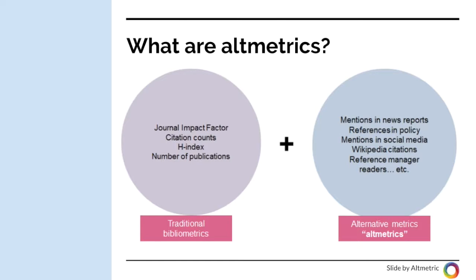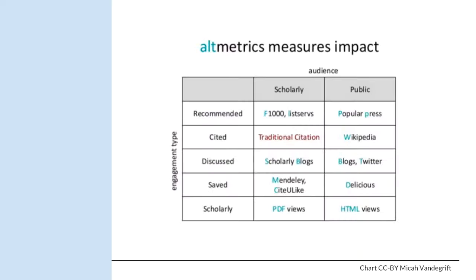Traditional bibliometrics include journal impact, citation counts, the H index, and the number of publications an author has. Alternative metrics, or alt metrics, track mentions in news reports, references in policy documents, mentions in social media, Wikipedia citations, and reference manager readers. Alt metrics can provide insight into the greater picture of engagement by seeing various engagements in both scholarly and public arenas.